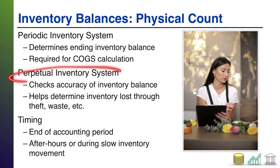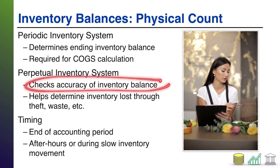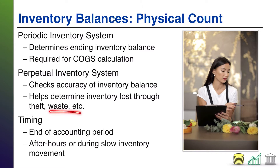In a perpetual system, which does keep track of the inventory you're selling as you sell it, the physical count still serves an important purpose as basically a safety net. Your accounting system is going to say you have a certain amount of inventory, but you physically go out and count it to check whether or not that really is the case. Why might they differ? Well, maybe there was some theft, some waste, or other situations you were unaware of that never got captured by the accounting system. The physical count will help identify whether that has happened, and then you can adjust your inventory accordingly.